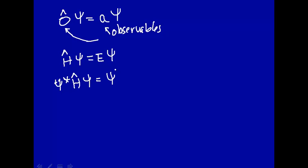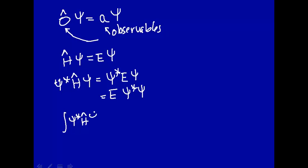This will be psi star, we're multiplying it on the left. Energy is a constant, so let's pull this out: energy times psi star psi. Now let's integrate this over some region of space: psi star H psi d tau. That will be equal to E — energy we can pull that out — times psi star psi. And if we have an orthonormal basis set, this will go to 1, so this is just equal to energy.